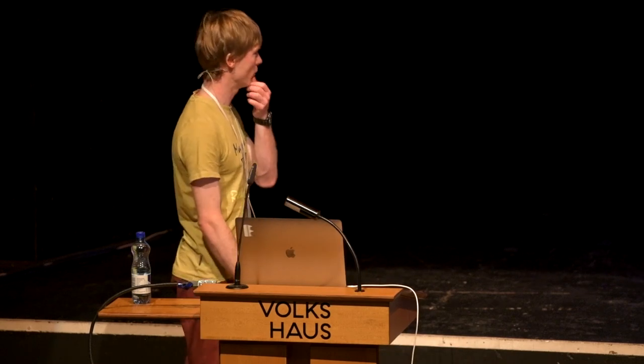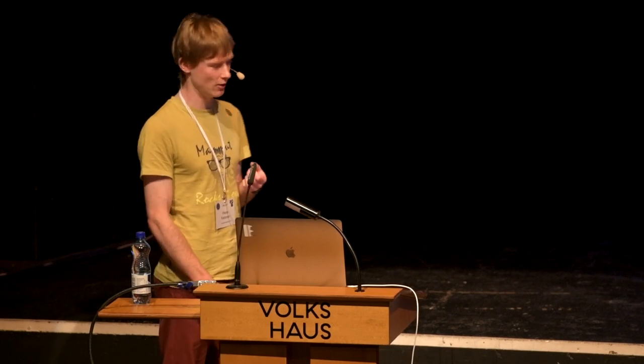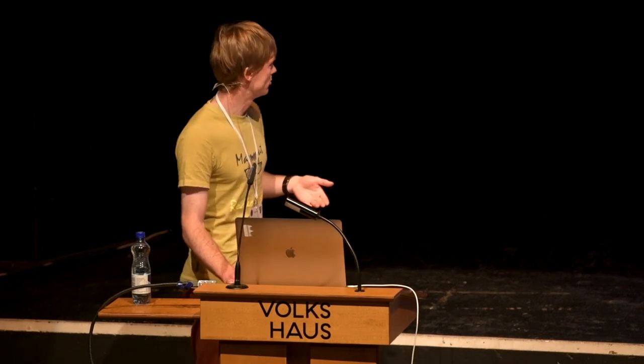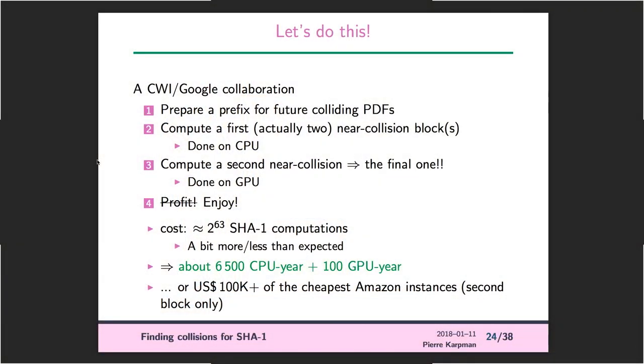The steps leading to the full attack: you prepare the prefix for the collision used in exploitation — that has to be done before computation starts. Then you compute the first block collision — actually two were computed. Then you compute the second block, and that's it. The cost was 2 to the 63 equivalent SHA-1 computations, roughly — a bit more and a bit less than expected.